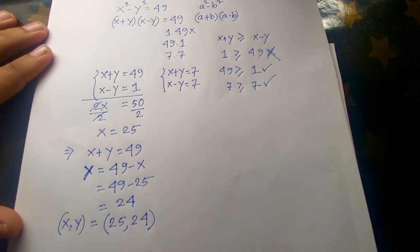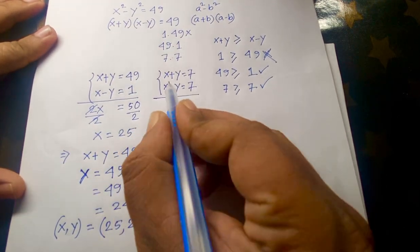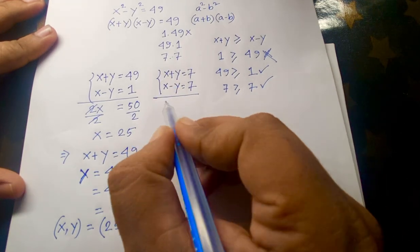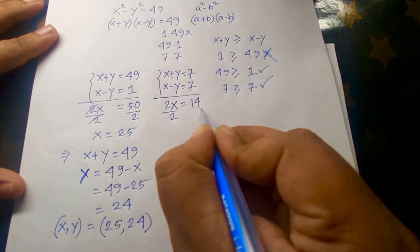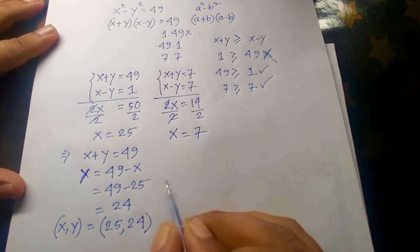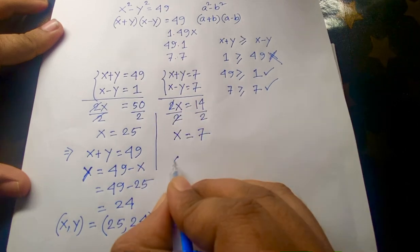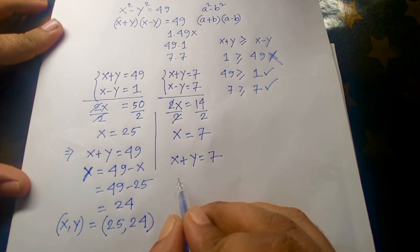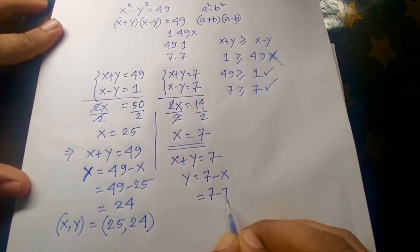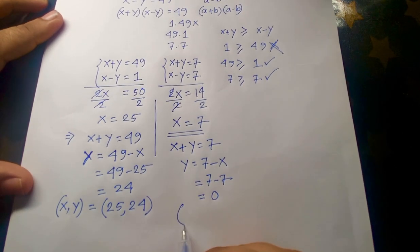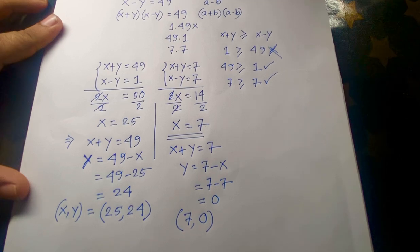For Case 2: x + y = 7 and x - y = 7. Adding both equations, the y terms cancel and we get 2x = 14, so x = 7. Then y = 7 - x = 7 - 7 = 0, giving x = 7 and y = 0.